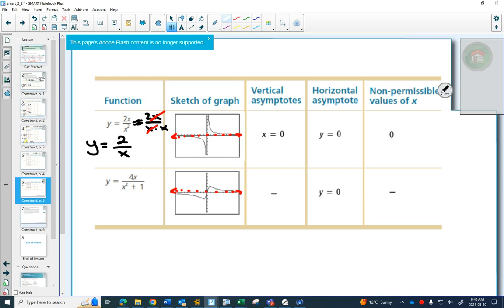Now usually, what's interesting about that one, usually when a non-permissible value cancels out, we get a hole, however, in this case, the non-permissible value is 0, that cancels out, but we are still left with 0 as a non-permissible value. So because the 0 is still left as a non-permissible value, we have a vertical asymptote at x equals 0.